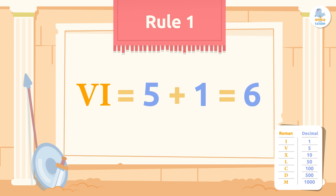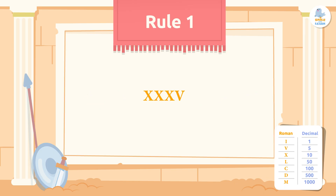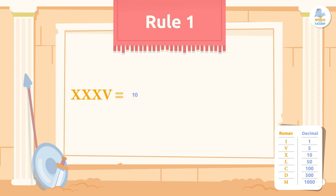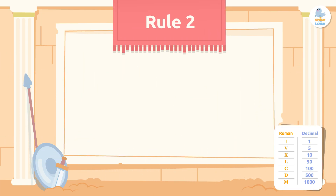Let's do another example. XXXV would be equal to the sum of 10 plus 10 plus 10 plus 5, which equals 35. Easy, isn't it? Let's move on to the next rule.